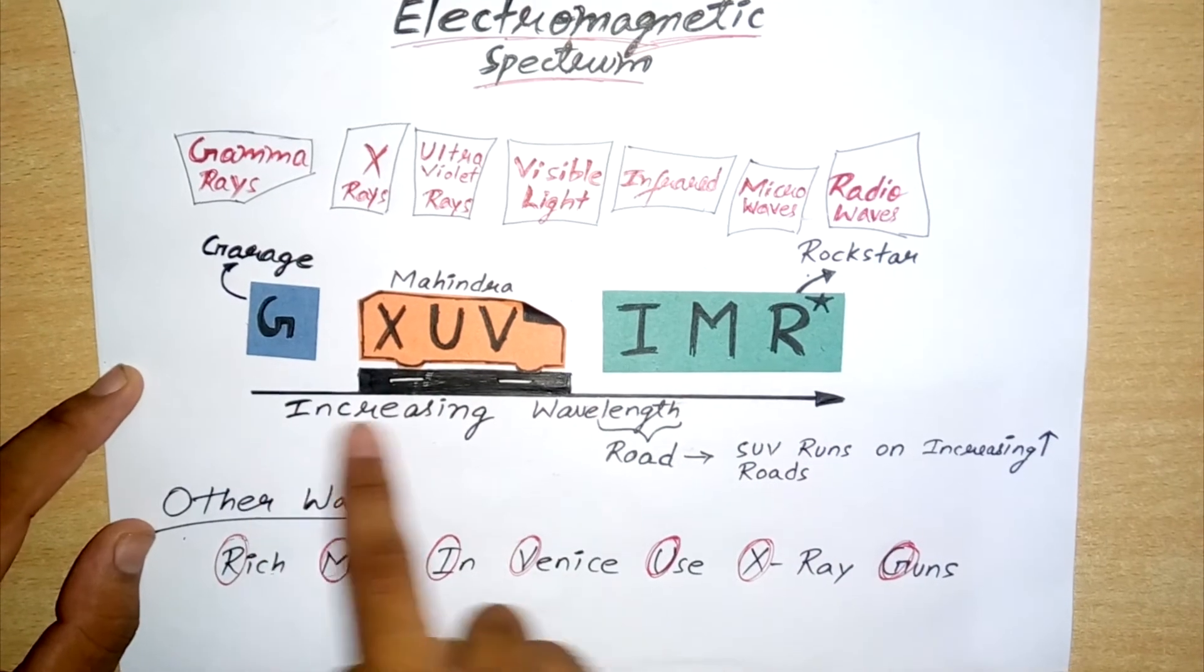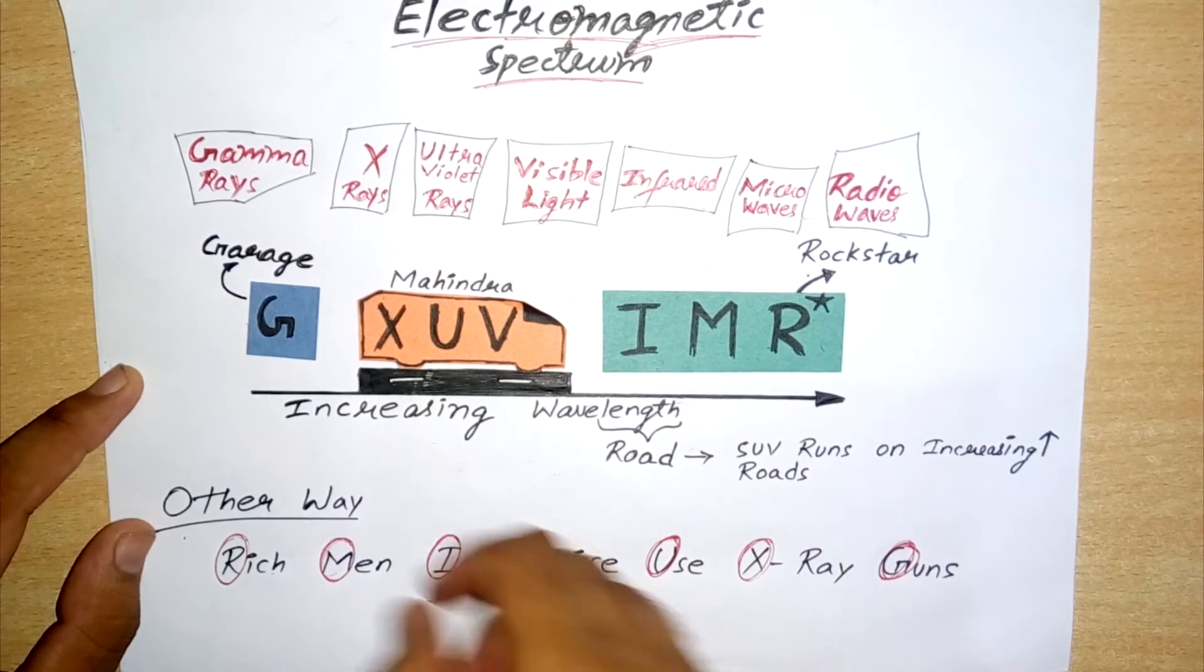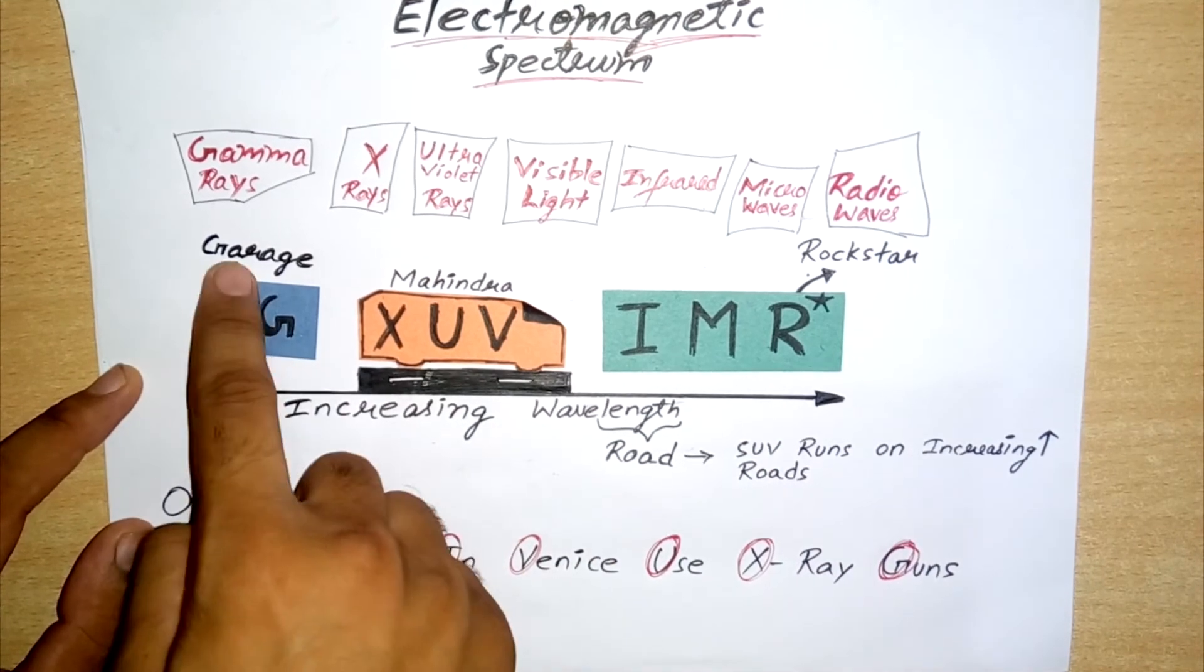So that is why this order is for increasing wavelength. Length road, and you can make symmetries here. And G is for garage, as car comes out from a garage.